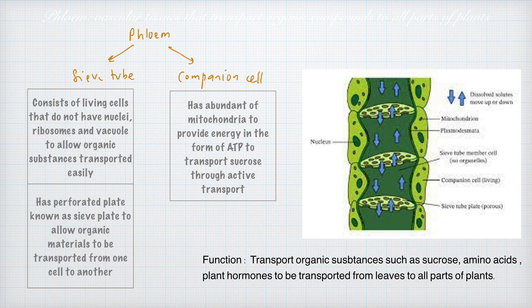The last tissue we are going to look at today is phloem tissue. The function of phloem tissue is to transport organic substances such as sucrose, amino acids, and plant hormones from leaves to all parts of the plant. If you look at the diagram on your right, the arrows go both up and down — meaning this type of transportation can occur both ways, unlike the one-way transportation in xylem.